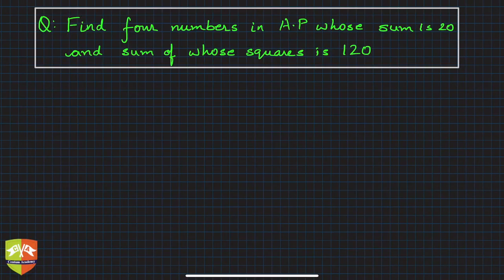Hello friends, welcome to the problem solving session on selection of terms of an AP. In the given problem, find four numbers in AP whose sum is 20 and sum of whose squares is 120.